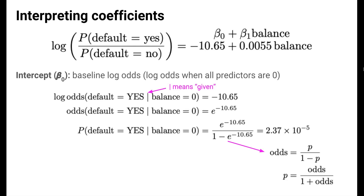Because odds and probabilities are related by simple formulas, we can convert this odds to a probability. The probability of an individual defaulting on their loan given a credit card balance of 0 dollars is quite small. Note that we should be cautious when interpreting intercepts, because sometimes setting all predictors to 0 is senseless. Here, a credit card balance of 0 dollars is realistic, but for quantitative predictors such as height and weight, 0 values make no sense. In that case, interpreting the intercept amounts to extrapolation.